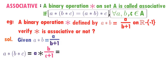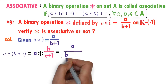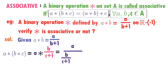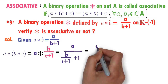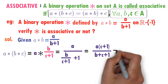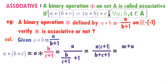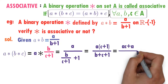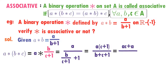Now observe here again: star operation between two elements. First element is A. Second element is B divided by (C+1). First element A divided by second element plus 1, as per the operation defined, gives A divided by (B/(C+1)) plus 1. Simplifying with LCM (C+1), this becomes A(C+1) divided by (B + C+1), giving AC+A divided by (B+C+1). This is A★(B★C).